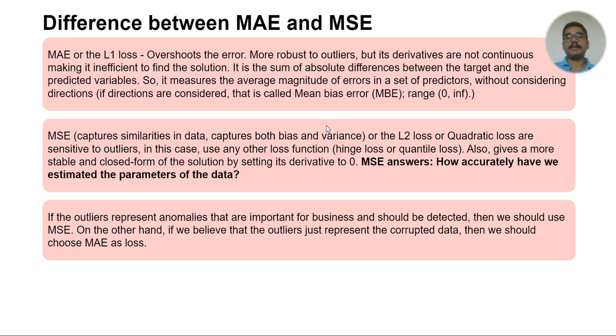On the other hand, if you believe that these outliers just represent some random deviations in the data or they just represent some fluke values or some corrupted data, then we should choose MAE as a loss function.